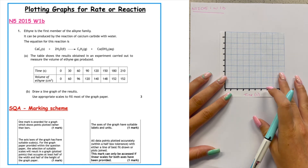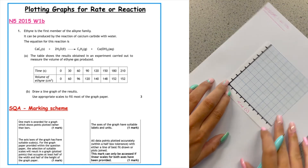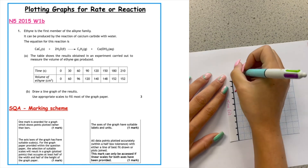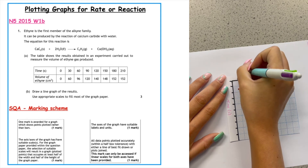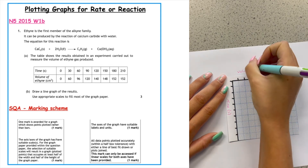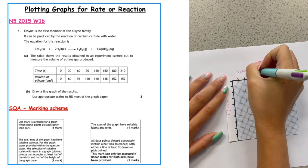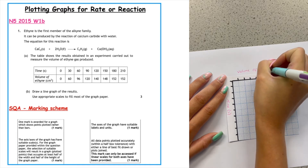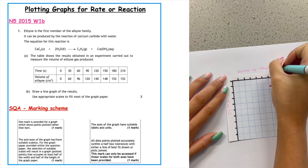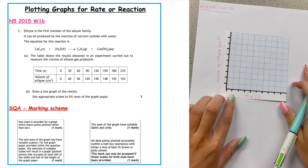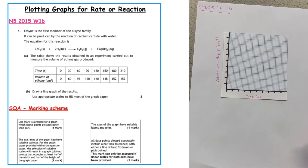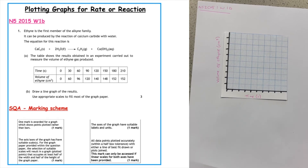On the y-axis this time we have volume of ethane, measured in centimetres cubed. By copying the labels and units given in the table you guarantee yourself one mark out of four.